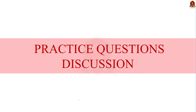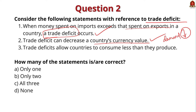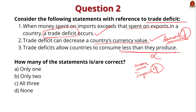For the preliminary practice question on trade deficit: Statement 1 — when money spent on imports exceeds that spent on exports, a trade deficit occurs — is correct. Statement 2 — trade deficit can decrease a country's currency value — is also correct, because when imports exceed exports, demand for the country's currency in international trade comes down, making it less valuable. Statement 3 — trade deficit allows countries to consume less than they produce — is incorrect; trade deficit actually allows countries to consume more than they produce, since it means importing more and exporting less. Therefore, the answer is option B: only two statements are correct.